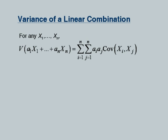In the absence of independence, the variance of the linear combination in general equals the sum of covariances weighted by the products of the corresponding coefficients. When i equals j, the terms involve ai-squared times the variance of xi, and if the variables are independent the covariance terms vanish, recovering the earlier result.